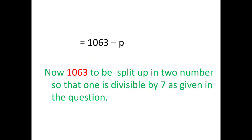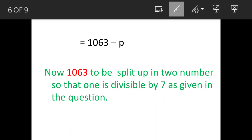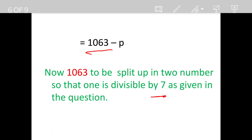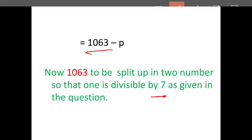Now the next step is that this 1063 minus p should be split up in a way that one part is completely divisible by 7, which is given in the question, and the remainder part will be added to it. It will not be multiplied or divided. It should be only subtraction or addition.